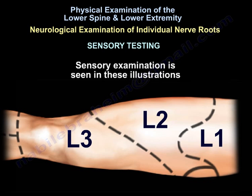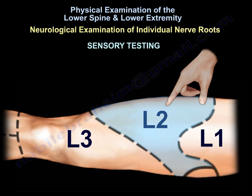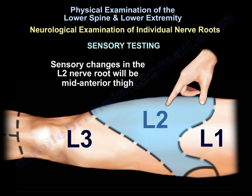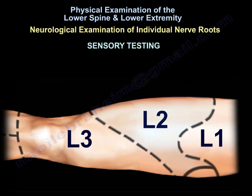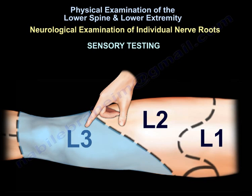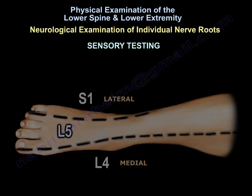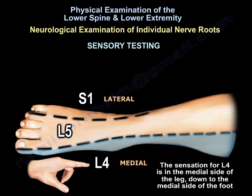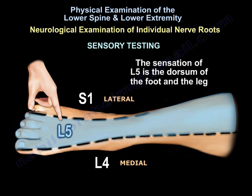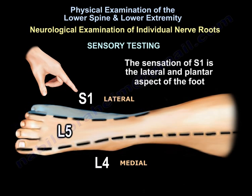Sensory examination by nerve root level: L2 sensation is at the mid-anterior thigh. L3 sensation is the distal part of the thigh, including the knee area. L4 sensation is on the medial side of the leg, down to the medial side of the foot. L5 nerve root sensation covers the dorsum of the foot and the leg. S1 nerve root sensation is the lateral and plantar aspect of the foot.